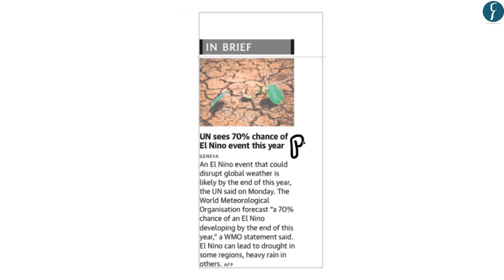The next article from page 8 states that the United Nations and the World Meteorological Organization have said there is a 70% chance of an El Niño effect developing this year. We will try to understand the El Niño effect with the help of the NCERT book.